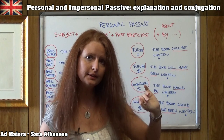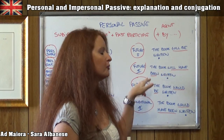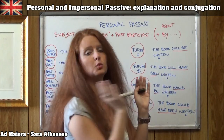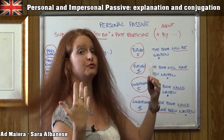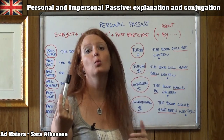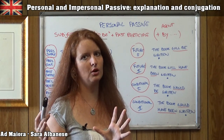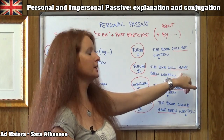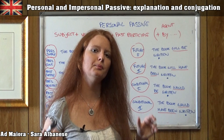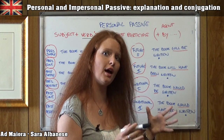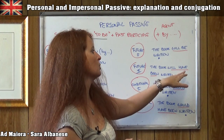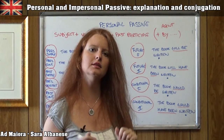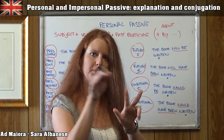Future two is a little bit more difficult. In this case we have: 'the book will have been written.' We can divide it into three parts. The first part is 'will,' the verb that forms the future. Then, as I said, 'will' always wants an infinitive form. In future one it was a present infinitive — the base form. In future two we have the past infinitive of the verb 'to be,' which is formed by the auxiliary 'have' and the past participle of 'to be,' giving us 'have been.' Then the past participle 'written.' So three parts: will + have been + written.